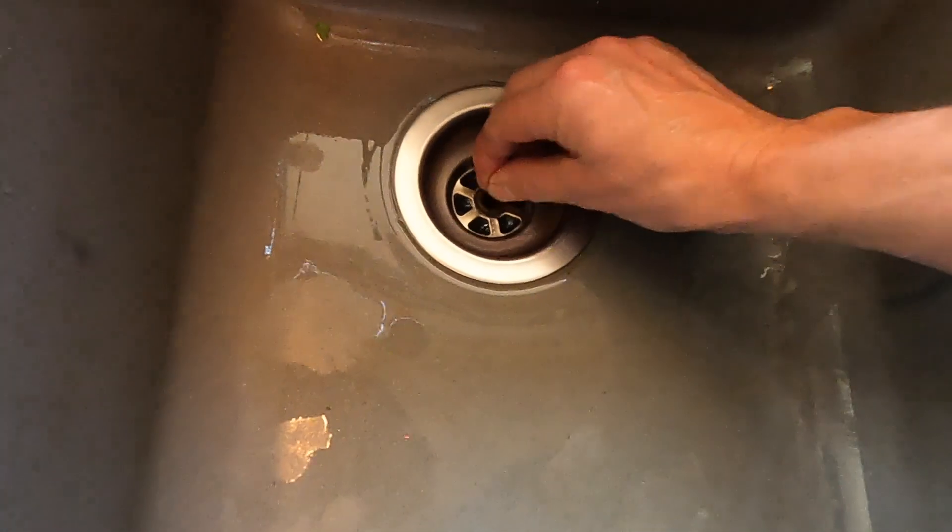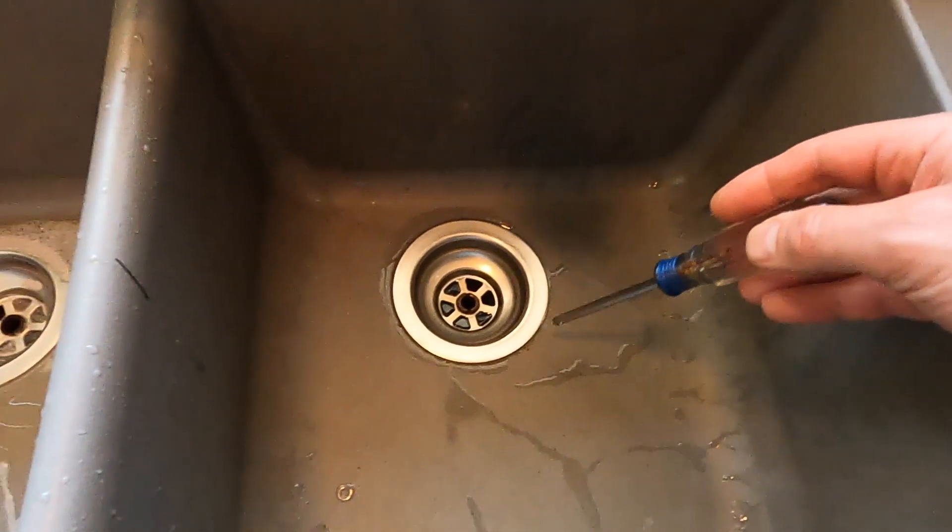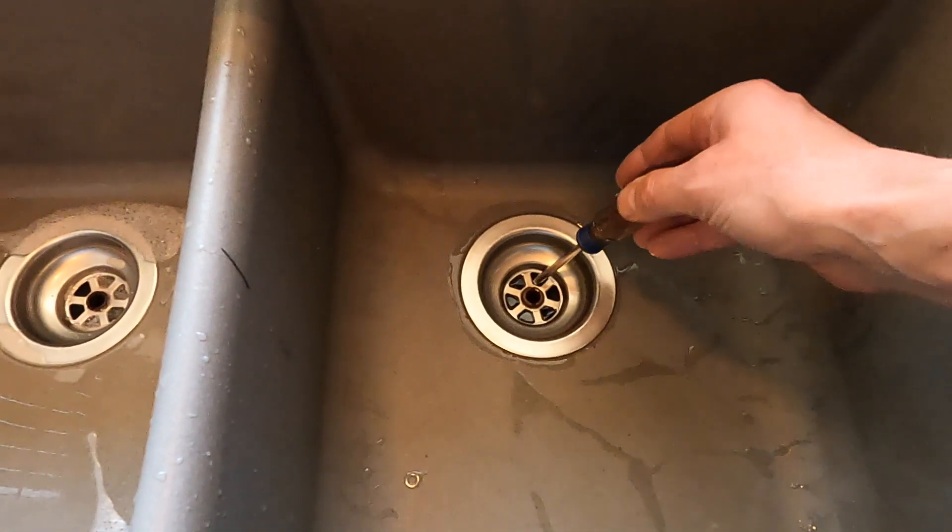That's draining a lot better. You can get any food debris out of there. It's the most common spot for a slow draining sink, just below in the basket strainer.